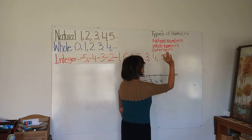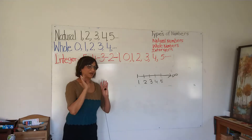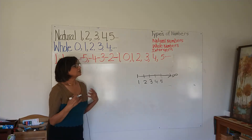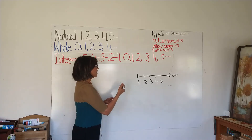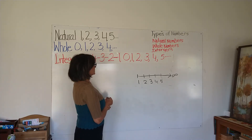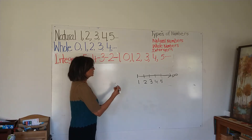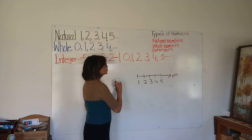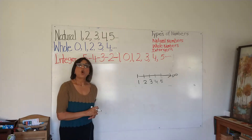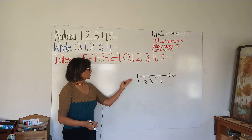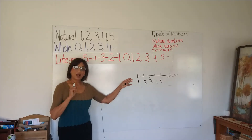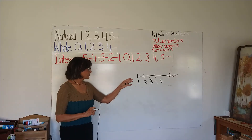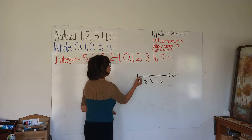Natural numbers start from one, two, three, four, five, and so on. I'm going to put an infinity sign here — it means it will go forever and forever without any end point. So now let's put zero to make whole numbers.